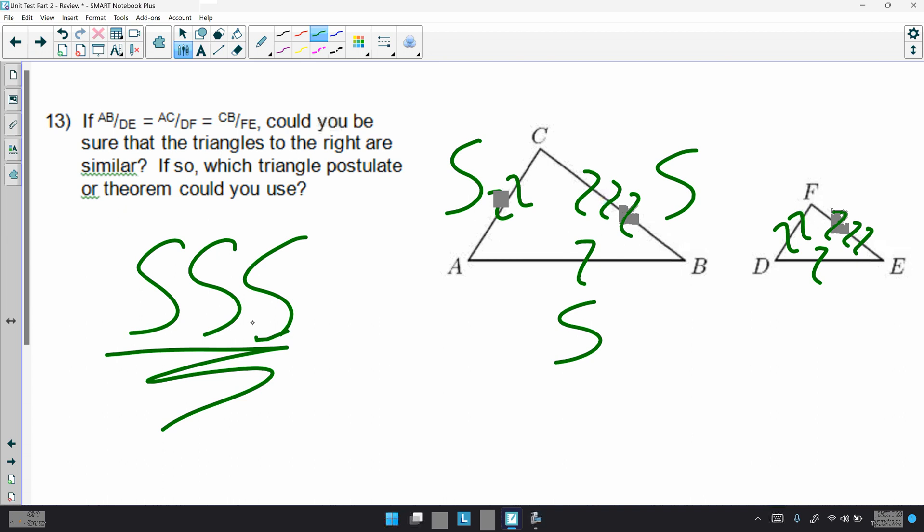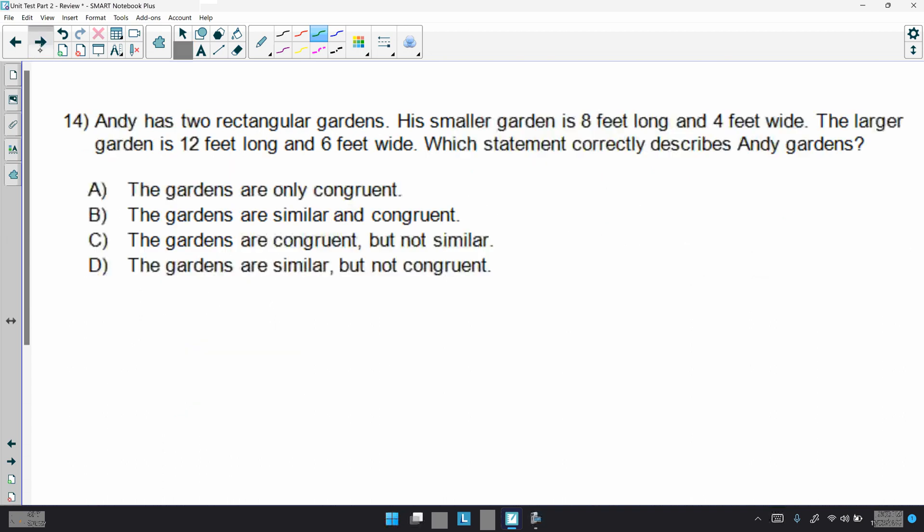14. Andy has two rectangular gardens. His smaller garden is 8 feet long and 4 feet wide. The larger garden is 12 feet long and 6 feet wide. Which statement correctly describes Andy's gardens? Well, if you notice here, it says the gardens are only congruent. That doesn't make sense because we clearly see there are different sizes. So, we're going to scratch that one out. The gardens are similar and congruent. That's pure nonsense. The gardens are congruent but not similar. Well, we just said they're not congruent. The gardens are similar but not congruent. Makes the most sense.